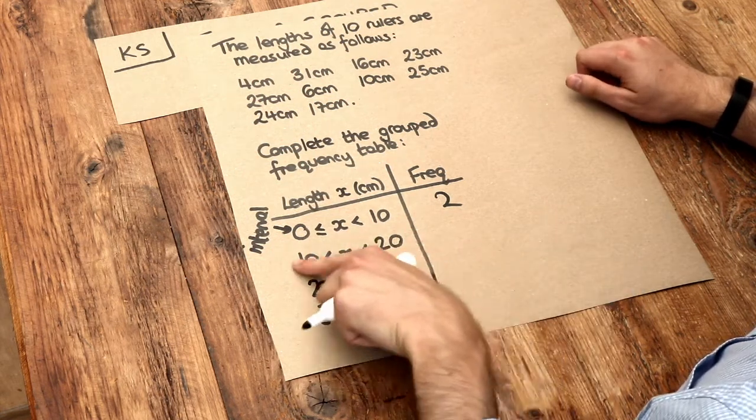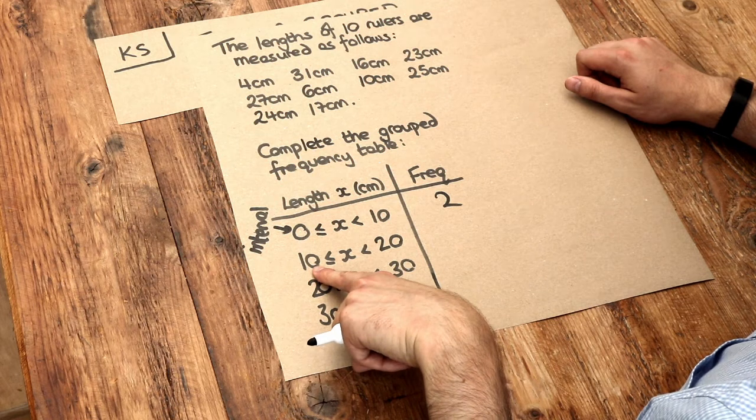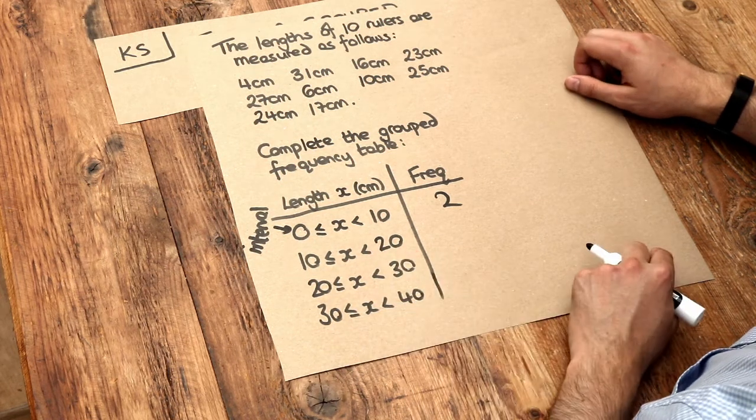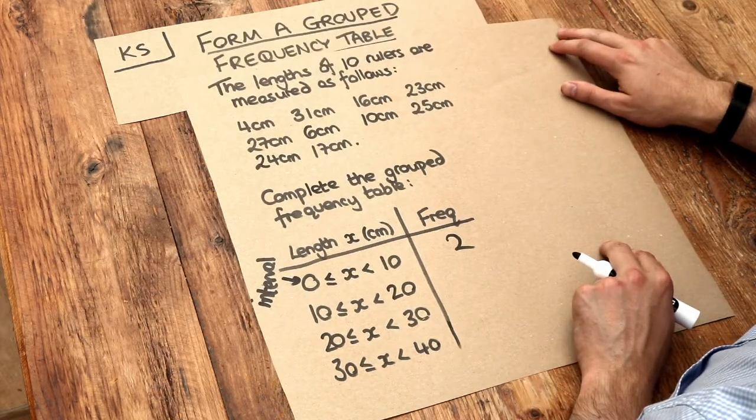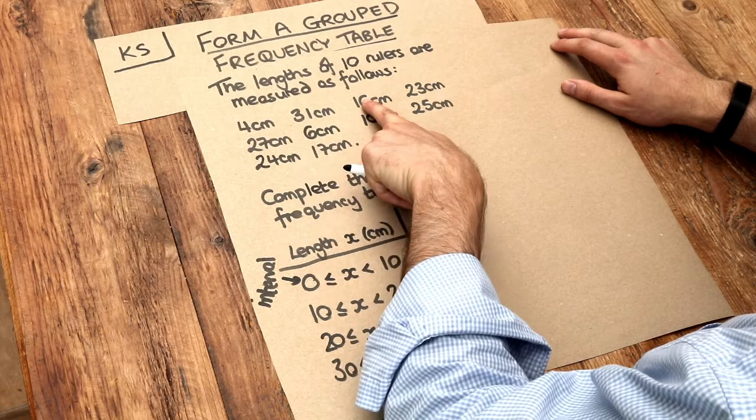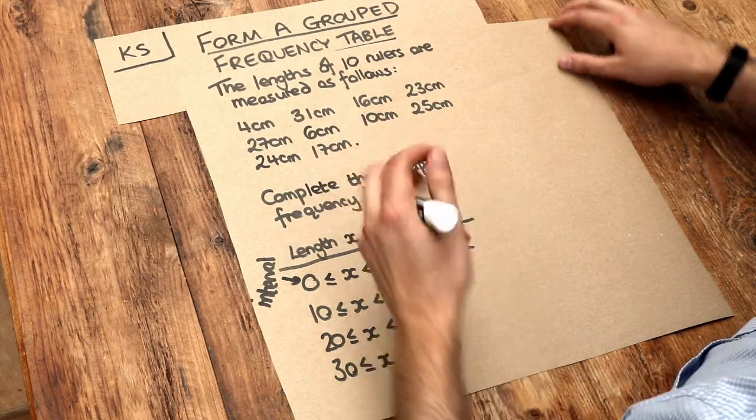Now the next interval is 10 to 20, including the 10 centimeters, but not including the 20, because x is less than 20. So how many rulers are between 10 and 20, exclusive of 20? Well we've got 1, we've got 2, and we've got 3, so it's 3 rulers.